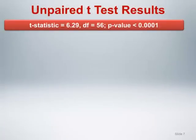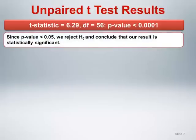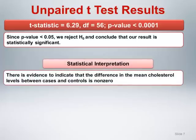The p-value generated by the unpaired t-test is less than 0.0001. Additional information about the test is provided along with the p-value: a t-statistic of 6.29 with degrees of freedom equal to 56. These values are characteristic of the test statistic for the unpaired t-test and are the basis for determination of the p-value. Since the p-value is less than or equal to 0.05, we reject the null hypothesis and conclude that our result is statistically significant. From a statistical perspective, we conclude that there is evidence to indicate that the difference in the mean cholesterol levels between cases and controls is non-zero.